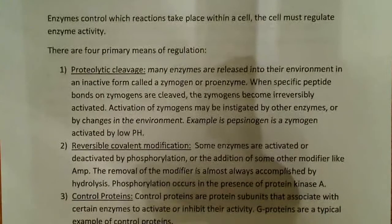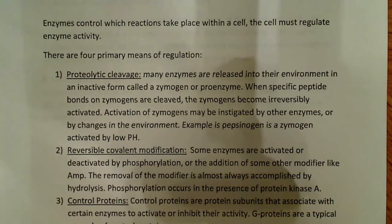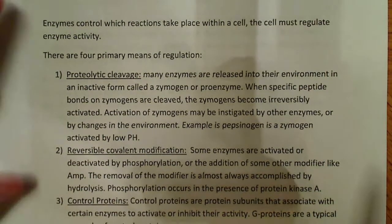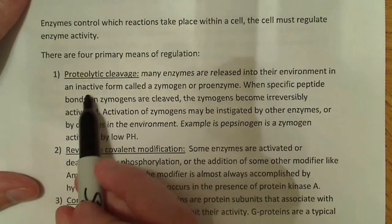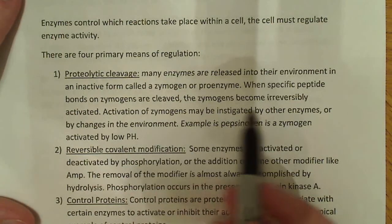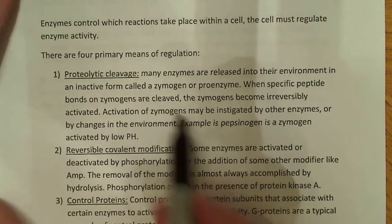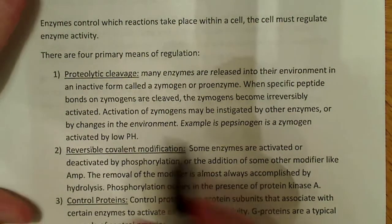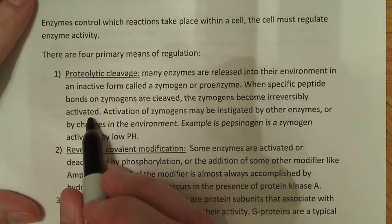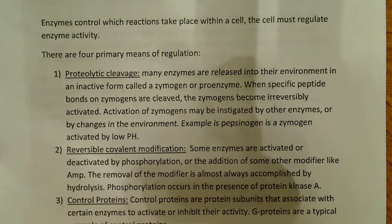There are four primary means of regulation. The first one is called proteolytic cleavage. Many enzymes are released into their environment in an inactive form called a zymogen or proenzyme — proenzyme is a little easier to pronounce. When specific peptide bonds on zymogens are cleaved, the zymogens become irreversibly activated. So the proenzyme is released into the environment in an inactive form, and then a specific peptide on the zymogen is cleaved and it becomes irreversibly activated — it starts catalyzing the reaction it's meant to catalyze.